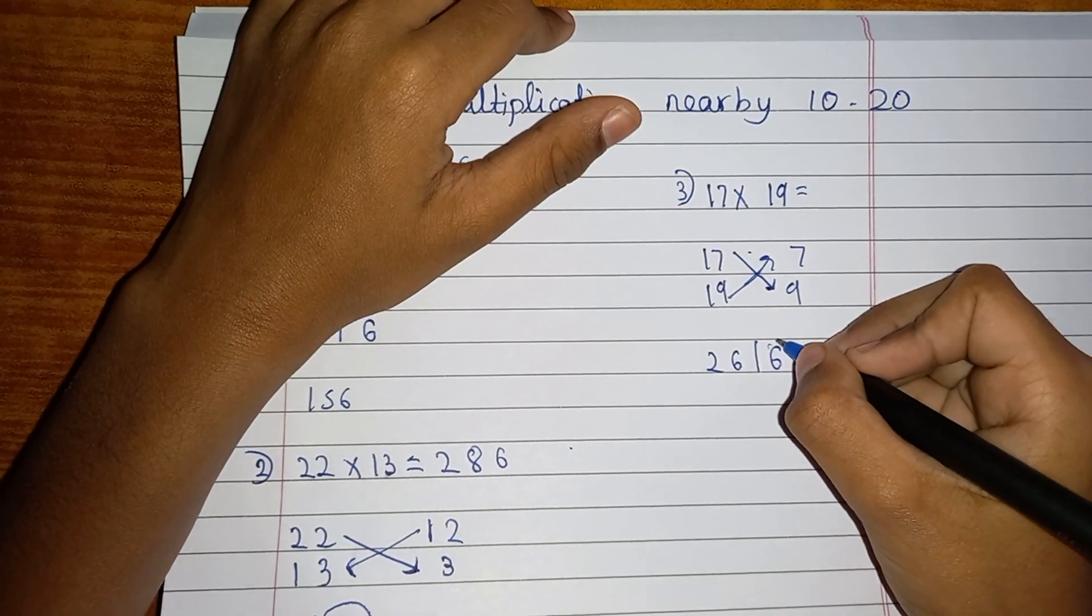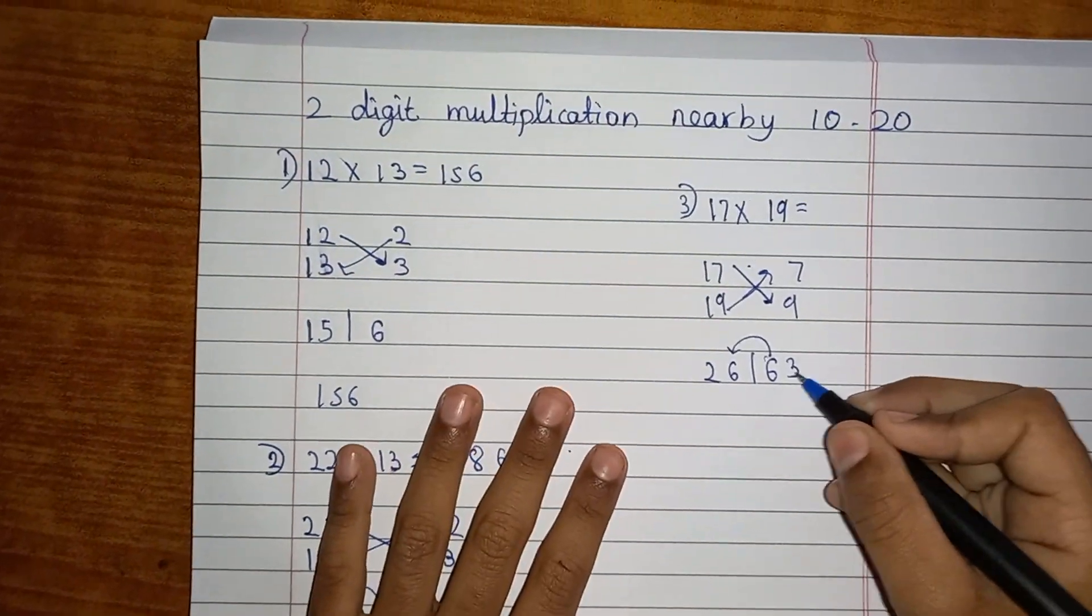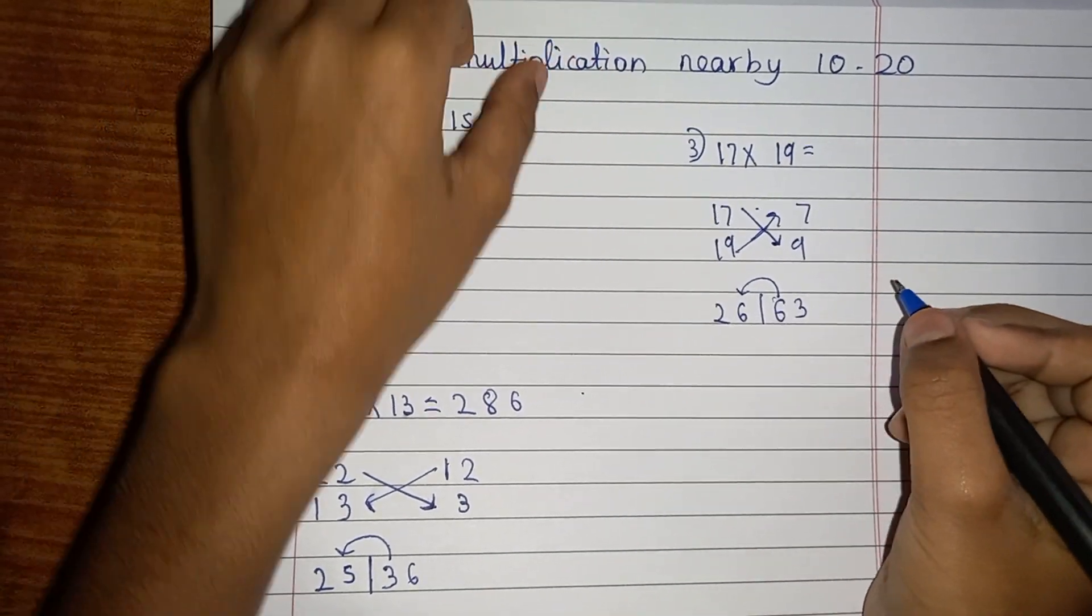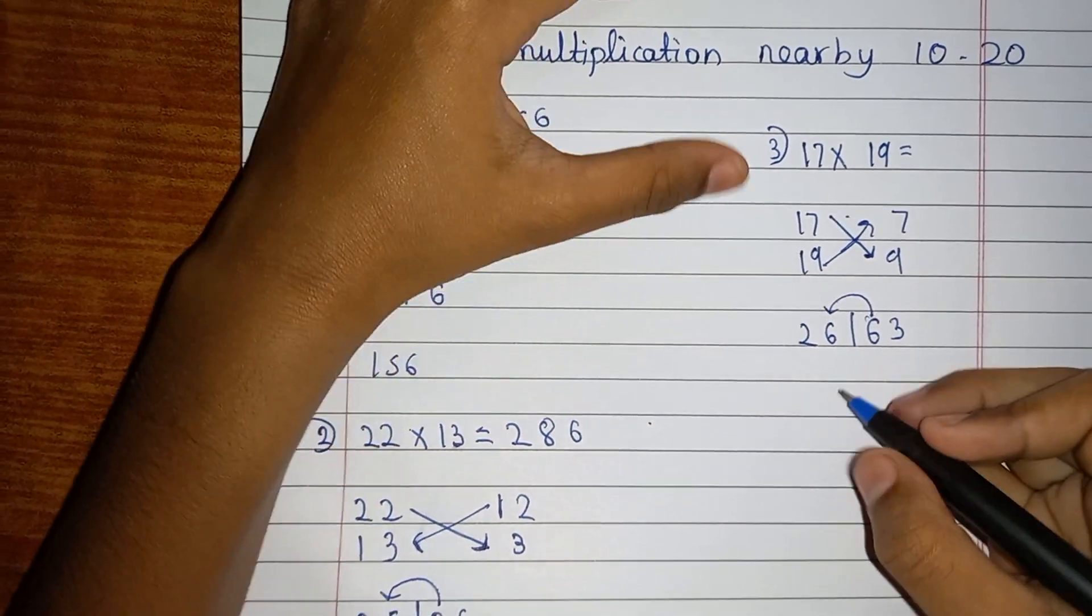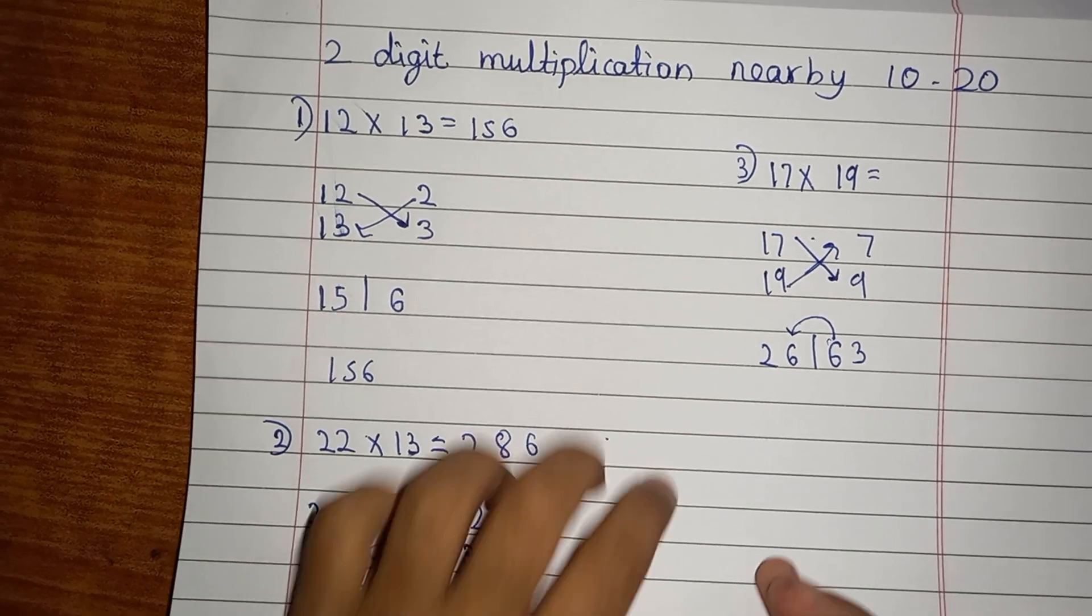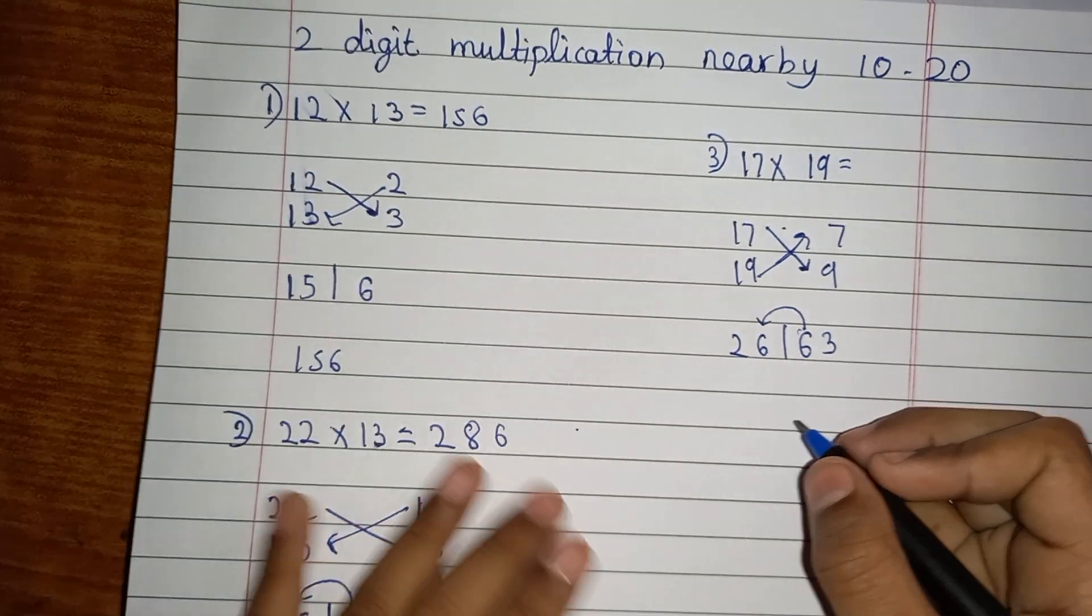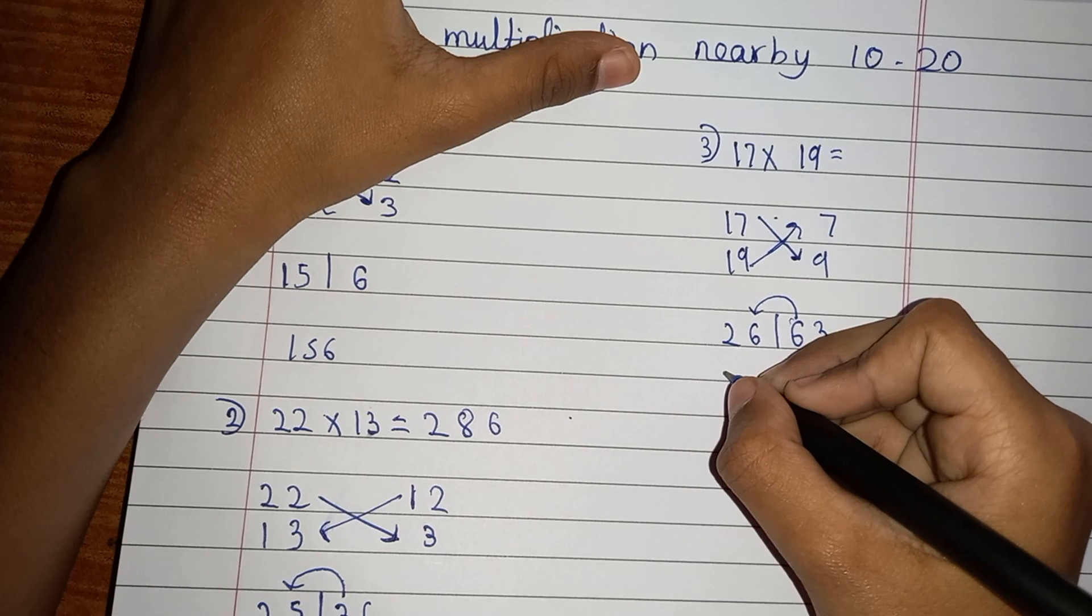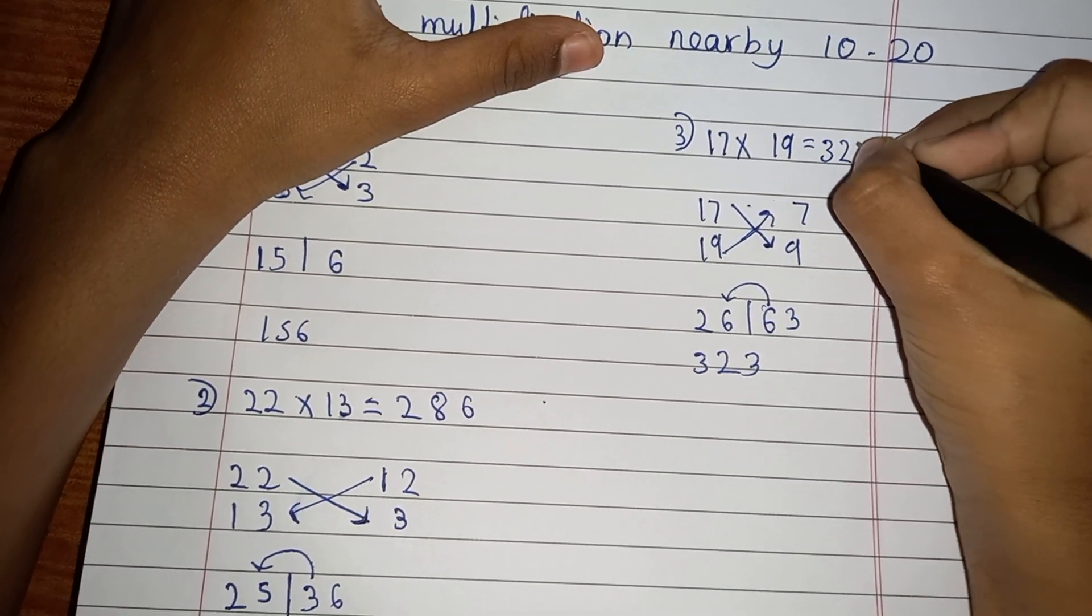So you have to take the digit from the tens place and add. Now we'll get 12 here, so I have to add that to 2 which will come 3. Then 2 will come, then 3 will come. Then the answer will be 323, so the answer is 323. If you want guys, you can check it in the calculator also.